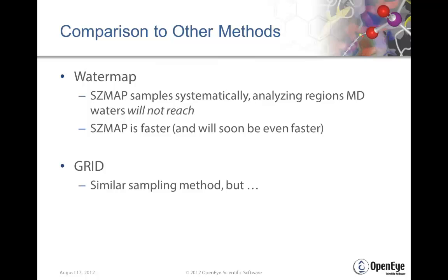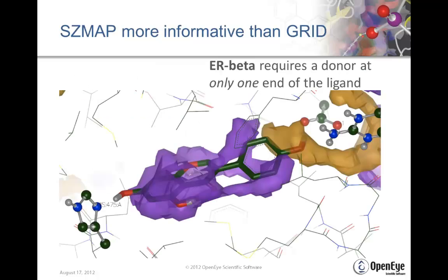Compared with WaterMAP, SHMAP can systematically analyze binding solvent sites even in areas where molecular dynamics waters would not reach in any reasonable amount of time. And because we can focus to just regions of interest, we can calculate much faster. GRID is a very similar sampling method using an explicit probe and different probe orientations to sample enthalpy in a binding site, but SHMAP is more informative than GRID.